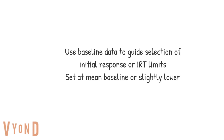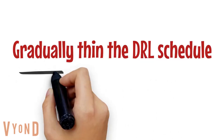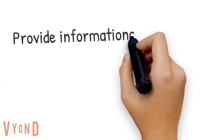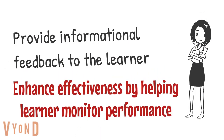Make sure to gradually thin the DRL schedule. For full session DRL, set new criteria based on the learner's current performance — decrease the number of allowed occurrences each session. For interval DRL, gradually decrease the number of responses per interval. For spaced responding, adjust the IRT criterion based on their performance as well. It's also important to provide informational feedback to the learner, as this helps enhance effectiveness by helping them monitor their own performance.